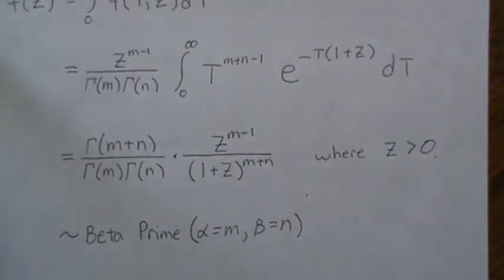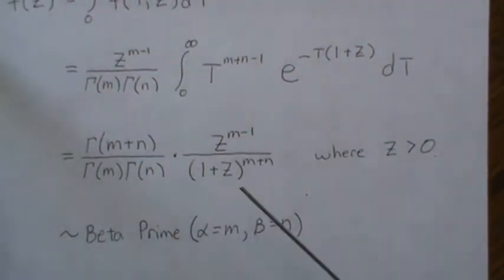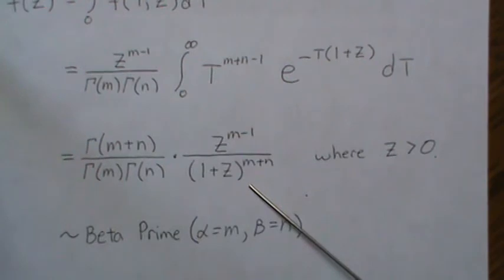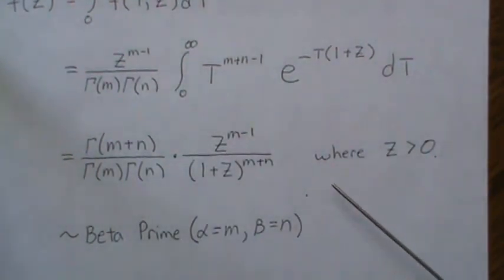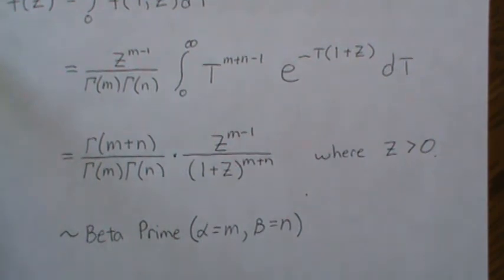Now, I have videos on the mean and the variance of a beta prime. And actually, if you look at the mean and variance of a t distribution, the beta prime comes up. So, but anyway, that's all I have for today. Hope you enjoyed it. If you did, please like it and subscribe so you don't miss the next one. Thanks. Bye.